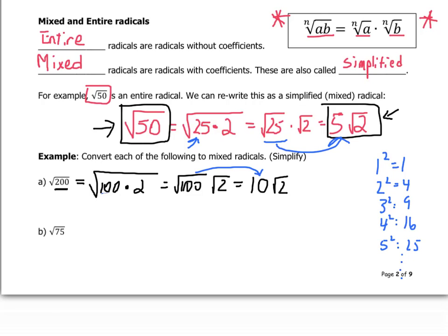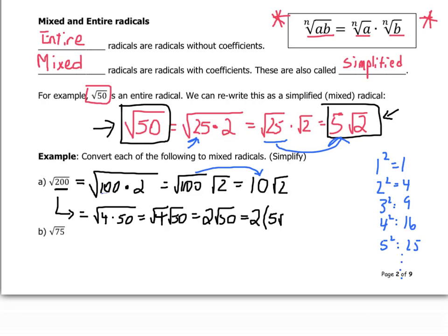If you broke 200 into 4 times 50, you get square root of 4 times square root of 50, which is 2 times the square root of 50. But we know the square root of 50 is 5 times the square root of 2, so multiplying through gives 10 root 2 — the same result. However, this took more work. The first version is faster because we used the largest possible perfect square factor. 4 is a perfect square factor of 200, but it's not the largest possible.